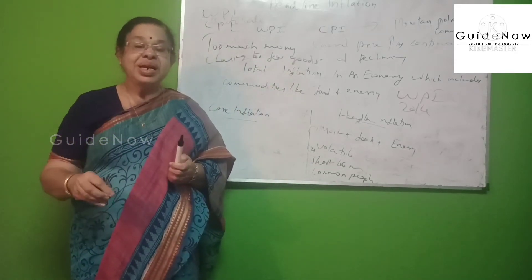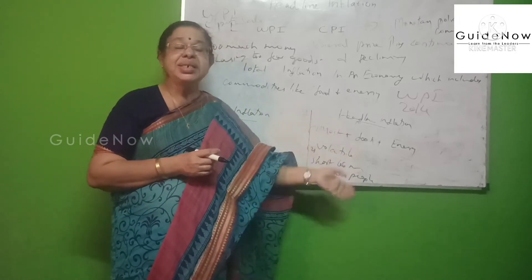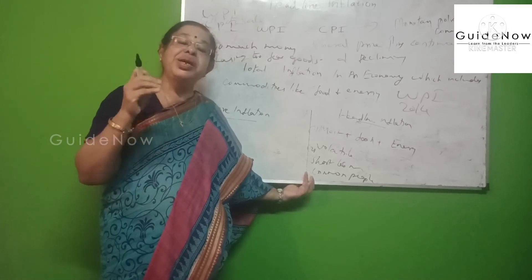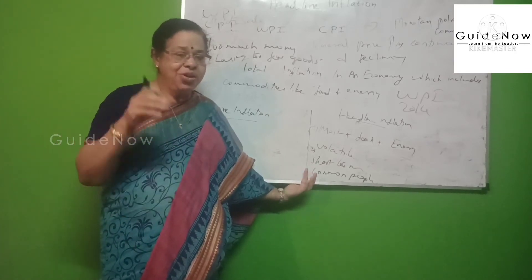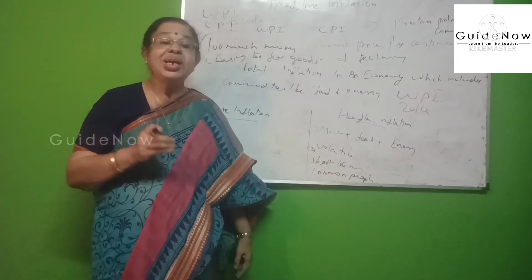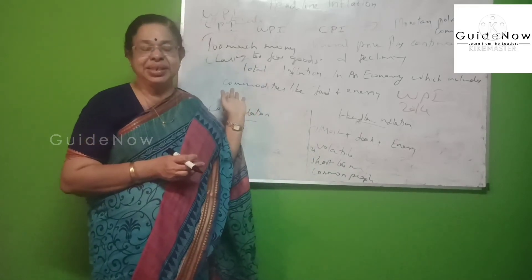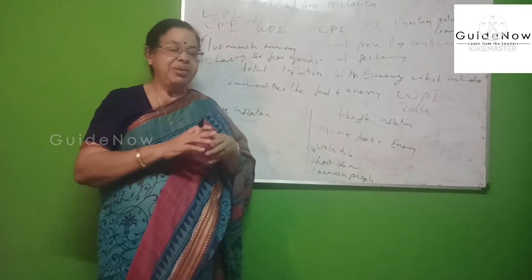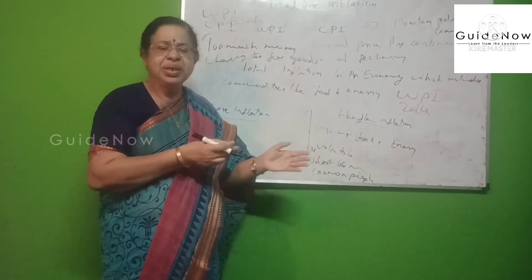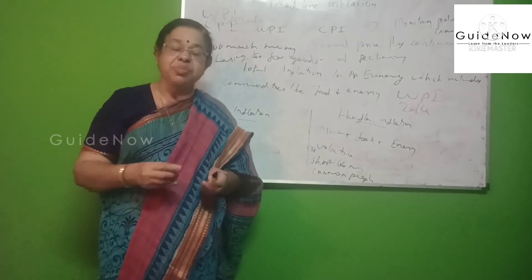Core inflation includes most of the headline components but excludes energy price and food item prices. Why are they avoided? Because these two items are mainly fluctuating. By avoiding the fluctuating items, core inflation becomes non-volatile — that is another important characteristic of core inflation. Non-volatile means not fluctuating — it is more or less constant or stable.